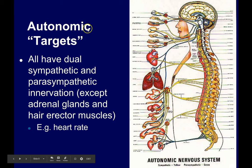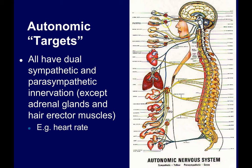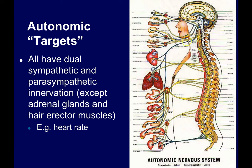The autonomic nervous system functions by controlling or influencing the activity of multiple autonomic targets throughout the body — tissues and organs directly influenced by innervation from the autonomic nervous system. Almost all of these targets — things like the heart, pupil dilation, digestion, and the diameter of airways inside your lungs — can be influenced by the autonomic nervous system, and almost all of them have innervation from both the sympathetic and the parasympathetic branch.